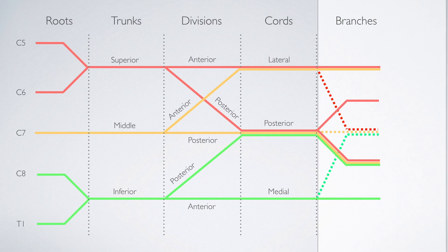Finally, cords split to give rise to the branches. You have the musculocutaneous, axillary, median, radial, and ulnar nerve. If you follow the colors, you'll get that C5, 6, and 7 form the musculocutaneous, C5 and 6 form the axillary nerve, C5 through T1 forms the median and radial nerve, and C8 and T1 form the ulnar nerve.